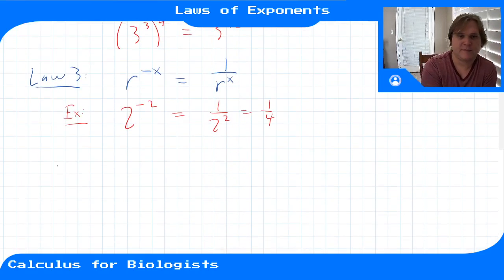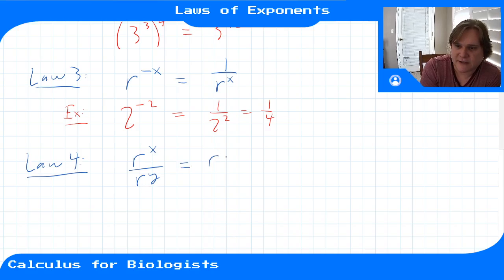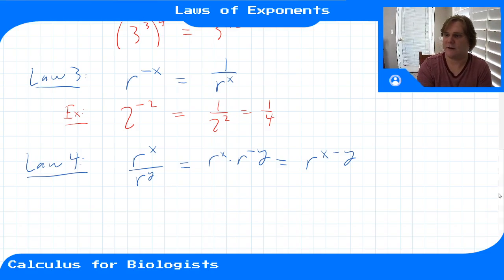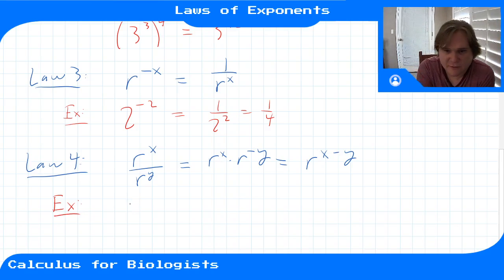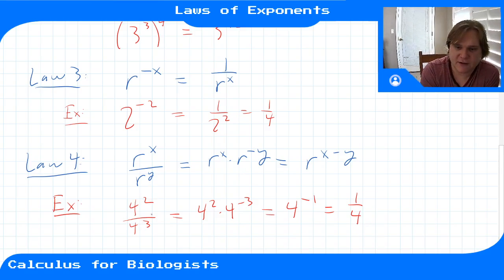The fourth law is what to do when you have r^x divided by r^y. You can think of this as r^x times r^(−y), using law three, and then using law one we add those exponents to get r^(x−y). So r^x divided by r^y equals r^(x−y). For example, 4² over 4³ gives us 4^(2−3) = 4^(−1), which is 1/4 — the two fours on top cancel with two on the bottom, leaving one on the bottom.